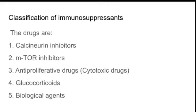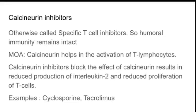The immunosuppressants are classified into five categories: first, calcineurin inhibitors; second, mTOR inhibitors; third, anti-proliferative or cytotoxic drugs; fourth, glucocorticoids; and fifth, biological agents. Calcineurin inhibitors are otherwise called specific T-cell inhibitors. Humoral immunity, that is B-cell immunity, is intact. Calcineurin inhibitors focus only on the T-cell.